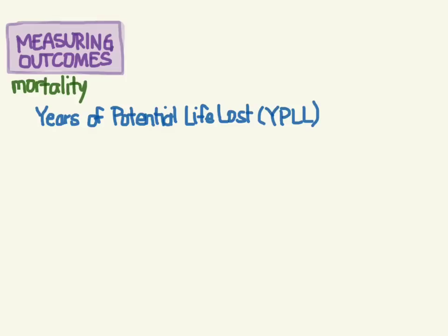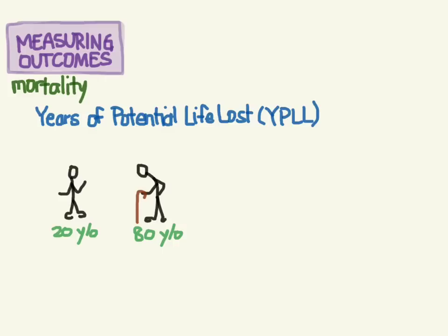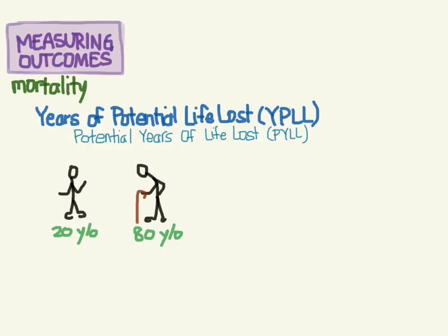This measure puts more emphasis on younger people who die. In traditional mortality calculations, the 20-year-old who dies and the 80-year-old who dies are given the same weight — they each count as one person who died. But with years of potential life lost, you put more weight on the younger person who died, so they count more.